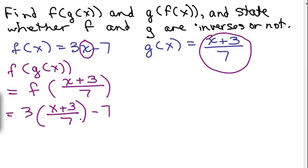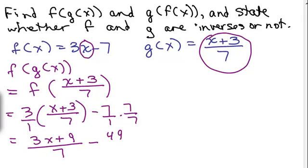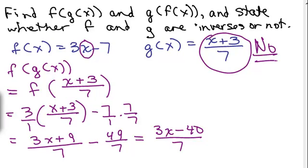Well, nothing cancels this time. So I have to do the distributive property. Remember this is 3 over 1. So that gives me 3x plus 9 over 7 minus 7. And I'm going to get a common denominator over here, 7 over 7, which is going to be 49 sevenths. So in order to do computations with fractions, you do have to have common denominators. So what does this give me? If I have a common denominator, you subtract the numerators. So I have 3x plus 9 minus 49. That's minus 40 over 7. So I plugged in x. I did not get x. I got 3x minus 40 over 7. So no, these are not inverses.